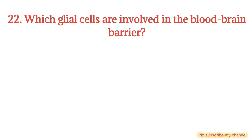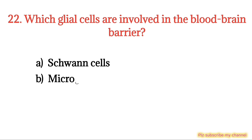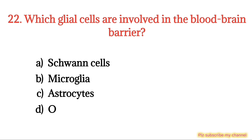MCQ number 22. Which glial cells are involved in the blood-brain barrier? Option A: Schwann cells. Option B: Microglia. Option C: Astrocytes. Option D: Oligodendrocytes. The right option is Option C.